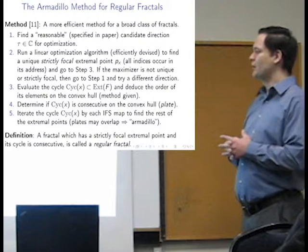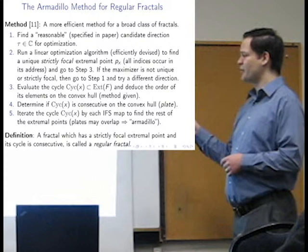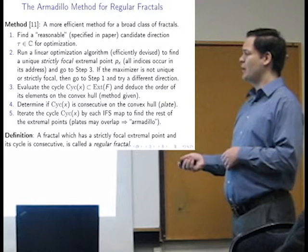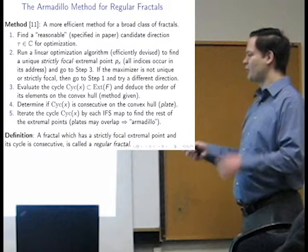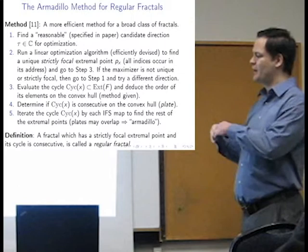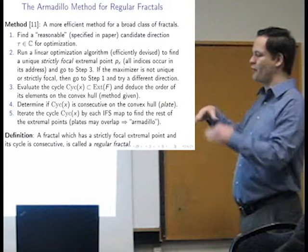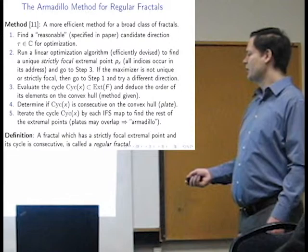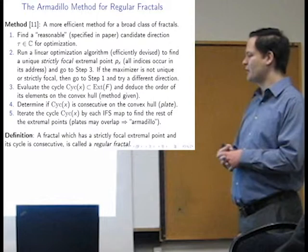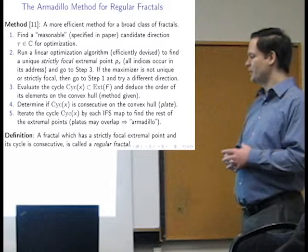So, there's a method in the paper that shows how to pick the target direction for a certain class of fractals. Not all fractals of unity, but a certain subclass. And then we need to find a cyclic focal extremal point, that all indices occur in the address. The reason for that is so that the plate will be spanning a large enough angle for the overlaps to work. How to deduce the order of extrema in the cycle is also given. And so basically, this plate will generate the rest of the convex hull. So, basically, this is for regular fractals. A regular fractal is just a fractal which has at least one strictly focal extremal point for which the cycle is consecutive.